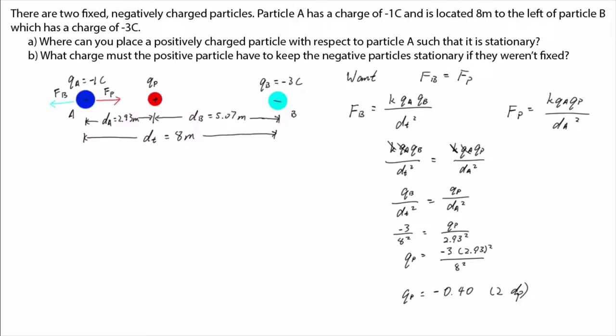FB points in the opposite direction to FP. Since we want them to point in opposite directions but be equally strong, we actually wanted FB equals negative FP. If we carry this through the working out, we'll find that the charge the positive particle has is in fact positive 0.4 coulombs.